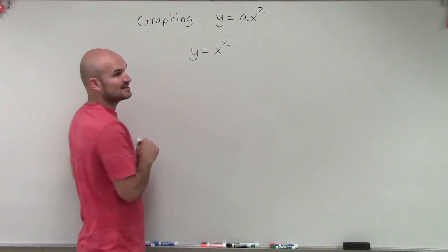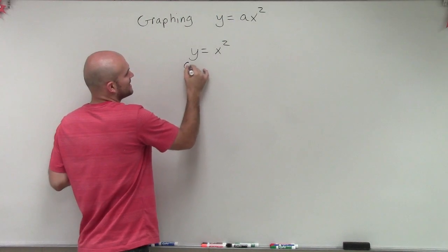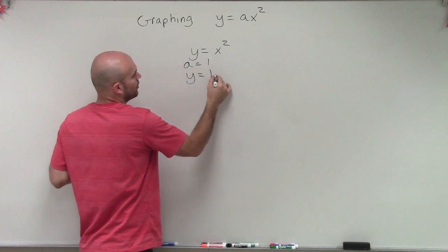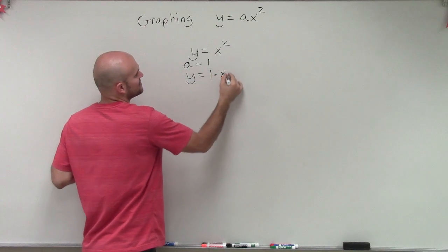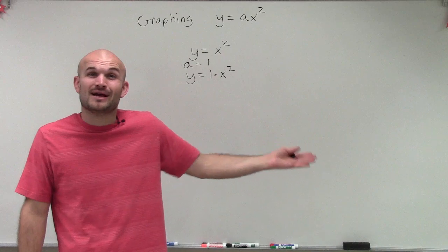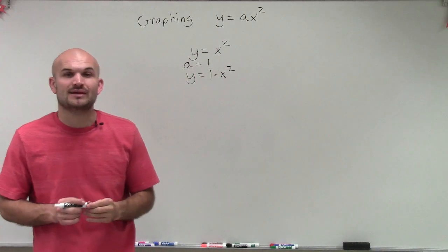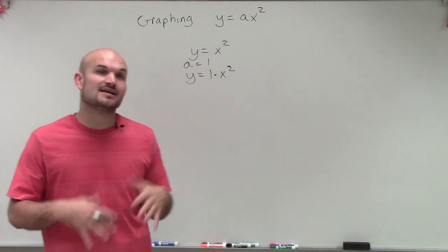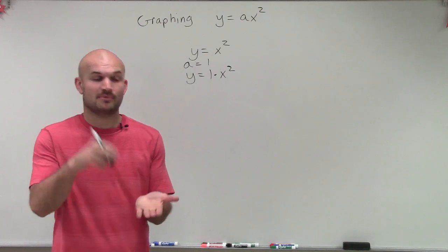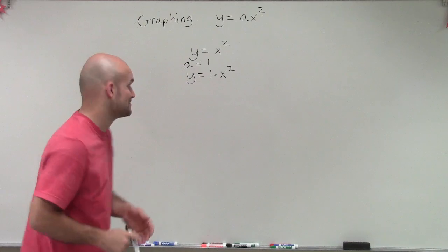In this case, if you ask what our a would be, a is going to equal 1. You could say y equals 1 times x squared. It's not very common to write 1 times x squared, but I want to graph the parent graph so we can understand what a quadratic is, and also look at the max or the minimum, our line of symmetry, and our intercepts.